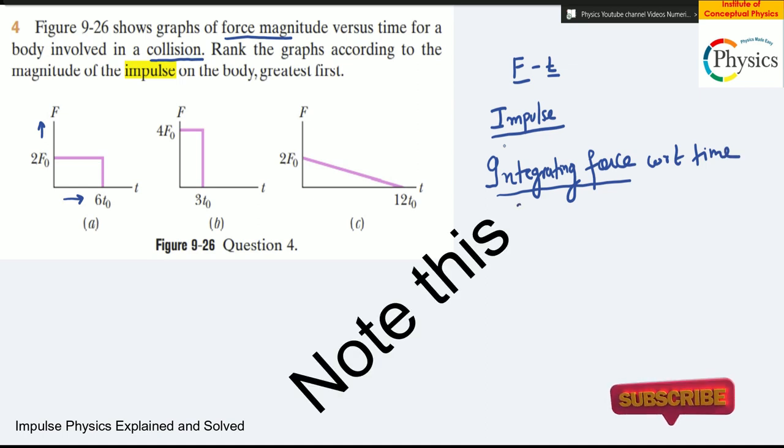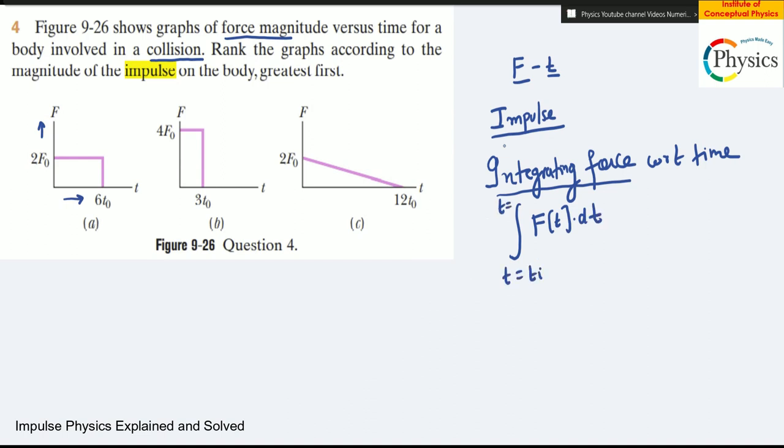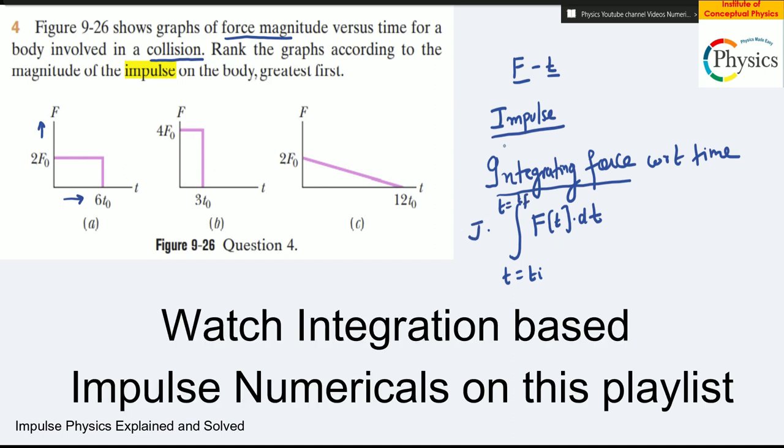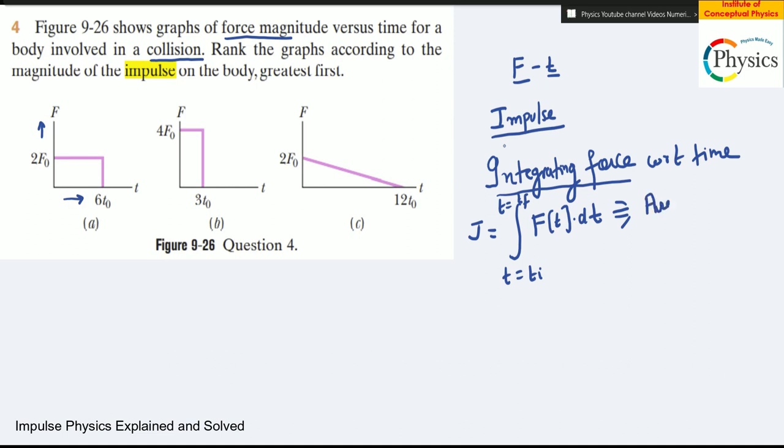The way you write this is F which is a function of time, F(t)dt, from t initial to t final. This gives you the impulse, which we represent by J. Since this is a definite integral, this can also be calculated with the help of the area under the graph.